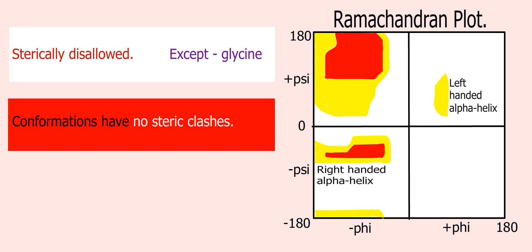The red regions correspond to conformations where there are no steric clashes. These are the allowed regions, namely the alpha helical and beta sheet conformations.